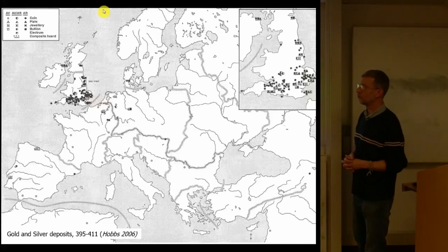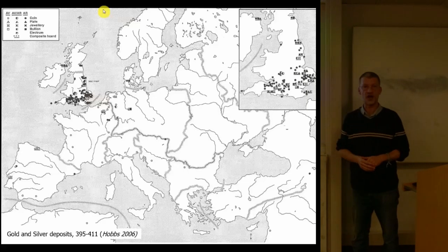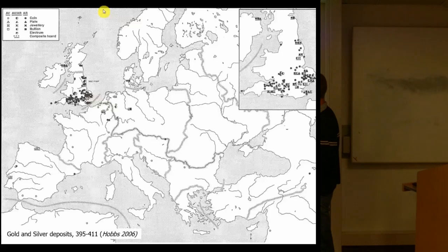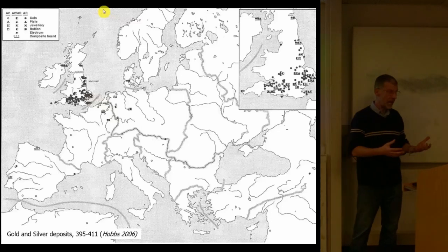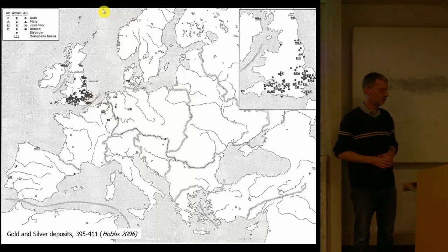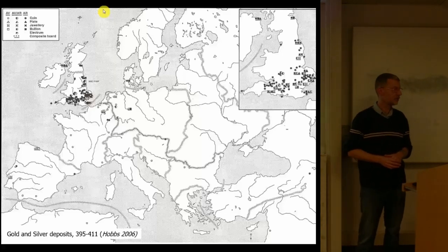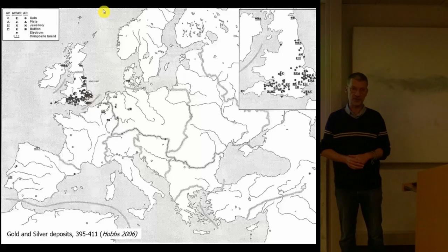Hoards are obviously not just buried in Roman Britain, and looking beyond the English Channel we can do the same exercise — map where coins and hoards are found and put them into a chronological sequence. This comes from Richard Hobbs's BAR book published in 2006, showing gold and silver deposits buried 395 to 411. In this case you can see that Britain behaves in a peculiar way — the population of Roman Britain buried and did not recover their gold and silver, unlike other parts of the Roman world: not in Gaul, not in Germany, not in Italy or Spain.